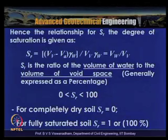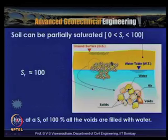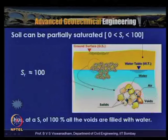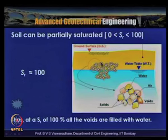For a fully saturated soil, SR = 100%. Soil above the water table is partially saturated due to temperature fluctuations and water evaporation. Soil below the water table is essentially completely saturated — all voids filled with water — except for minor occurrence of air bubbles. So below the water table SR ≈ 100%, while above the water table a partially saturated condition prevails.